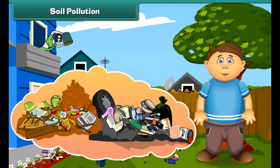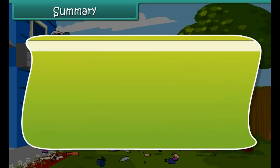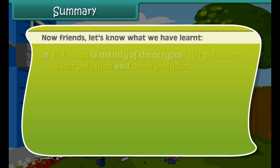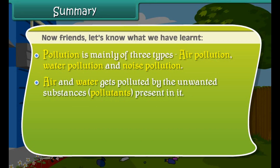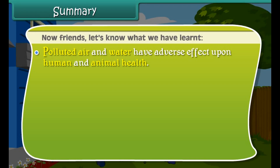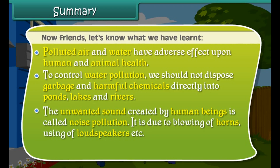Now friends, let's summarize what we have learned. Pollution is mainly of three types: air pollution, water pollution, and noise pollution. Air and water get polluted by unwanted substances called pollutants. Sewage from homes and wastes from factories are the main sources of water pollution. Polluted air and water have adverse effects on human and animal health. To control water pollution, we should not dispose garbage and harmful chemicals directly into ponds, lakes, and rivers. The unwanted sound created by human beings is called noise pollution, caused by blowing of horns, use of loudspeakers, etc. The spoilage of soil quality is called soil pollution.